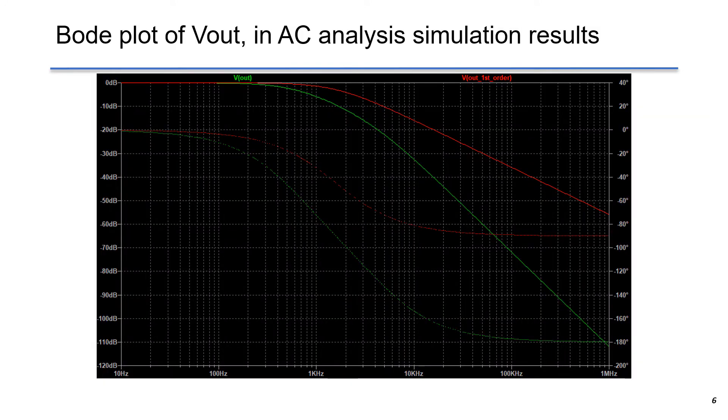This is the Bode plot of Vout and Vout at the first-order low-pass filter in AC analysis. The AC analysis gives more insights into the circuits. We can see that the second-order filter has more attenuation than the first-order.